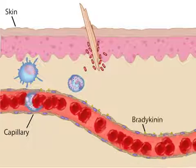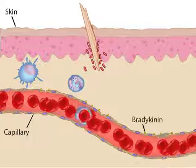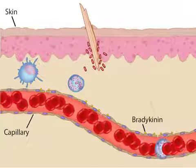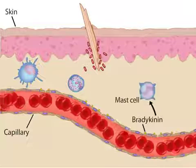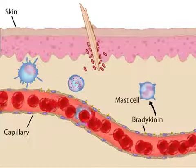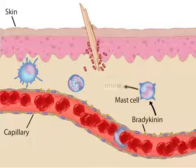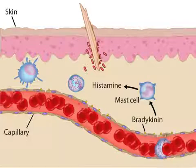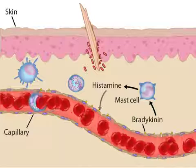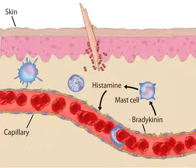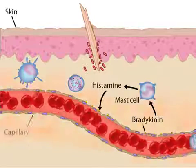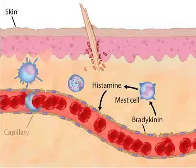Bradykinin molecules also bind to other cells of the immune system called mast cells that are in the area, causing them to release histamine. The histamine further loosens the endothelial cell junctions, allowing more fluid and cells to move out of the capillaries.